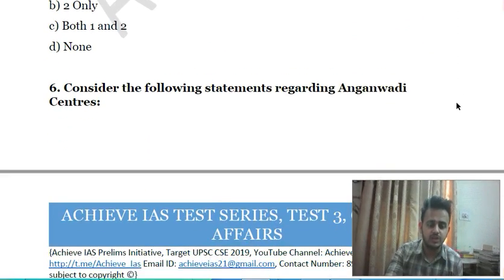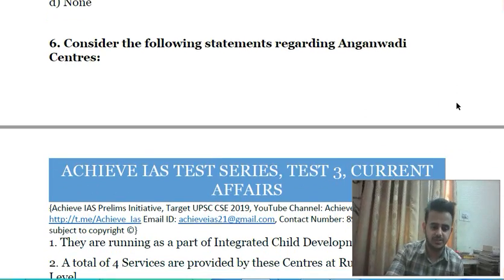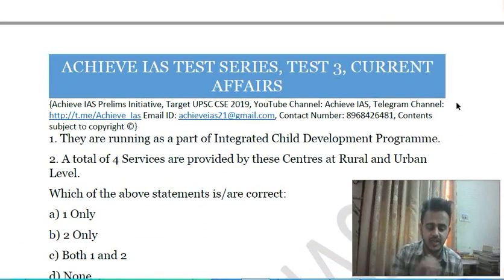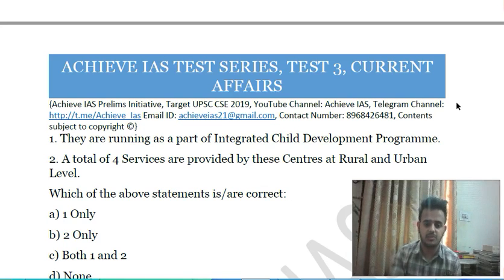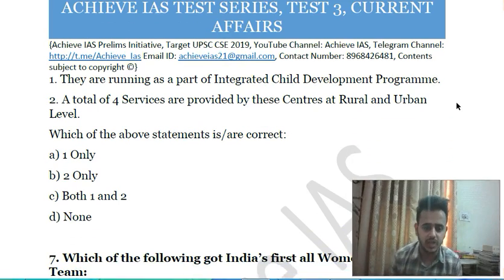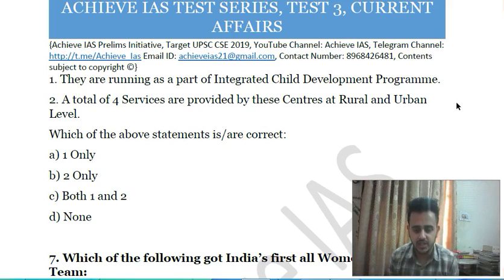Sixth question: consider the following statements regarding Anganwadi centers — first, they are run as part of the Integrated Child Development Program; second, a total of four services are provided by these centers at rural and urban levels. Choose the correct statement.